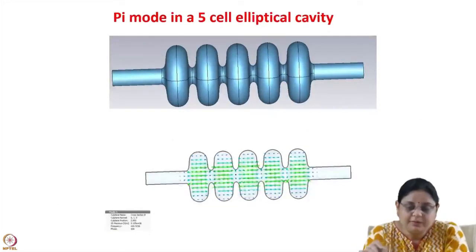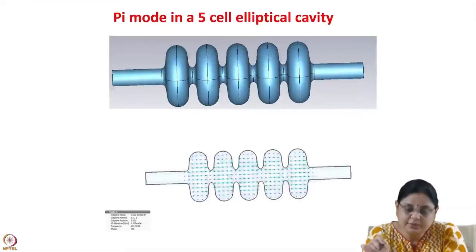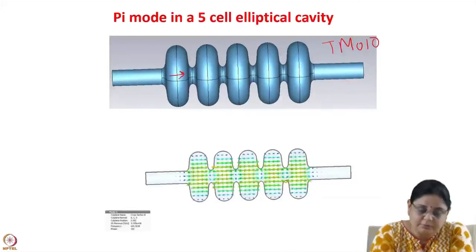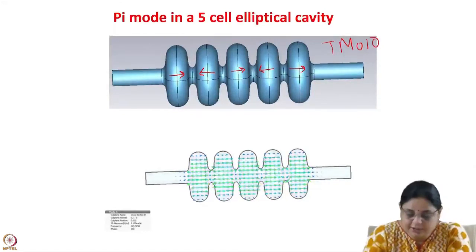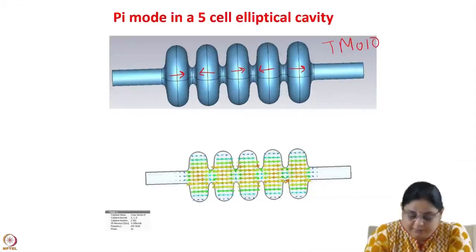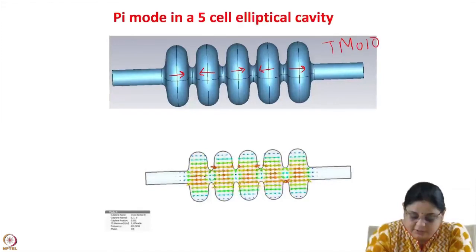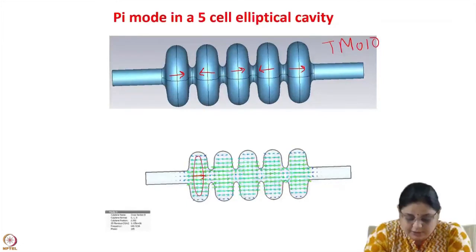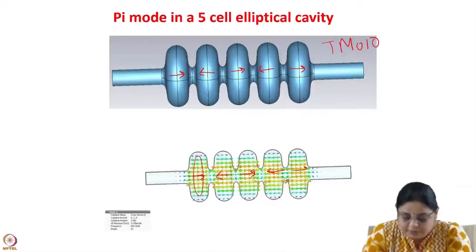The π mode in a 5-cell elliptical cavity — normally a superconducting elliptical cavity works in the π mode. In the π mode, the TM010 mode is excited: at a particular instant of time, the field is in the forward direction in cell 1, reverse in cell 2, forward in cell 3, reverse in cell 4, and forward in cell 5. In each cell the electric field is along the axis, and there is also a magnetic field. The fields in adjacent cells are out of phase with each other.